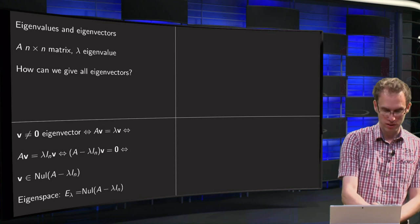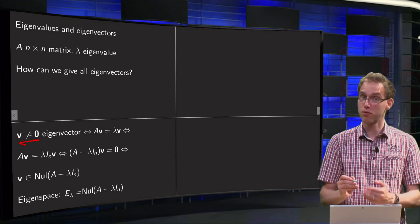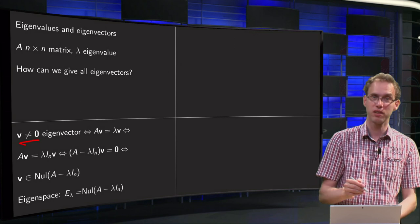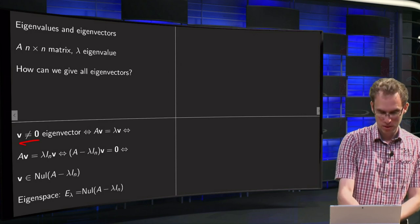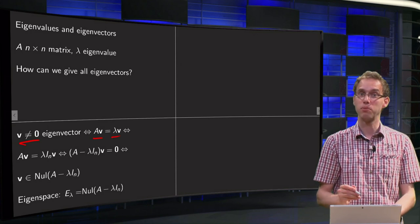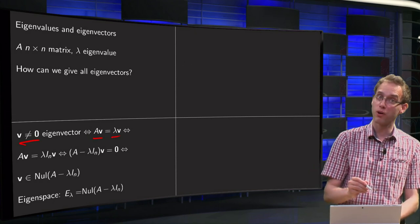Suppose we have a vector v non-zero, an eigenvector. An eigenvector is never the zero vector. Then we know that A times v equals lambda times v, and we do the same trick as we did quite often already.